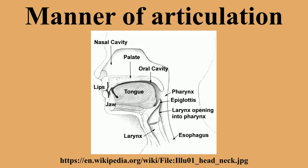Other parameters: Sibilants are distinguished from other fricatives by the shape of the tongue and how the airflow is directed over the teeth. Fricatives at coronal places of articulation may be sibilant and non-sibilant, sibilants being the more common. Taps and flaps are similar to very brief stops; however, their articulation and behavior are distinct enough to be considered a separate manner, rather than just length.